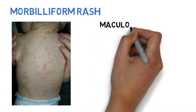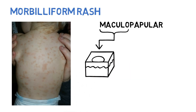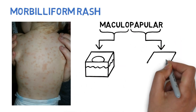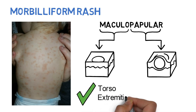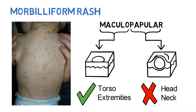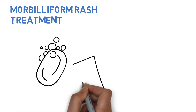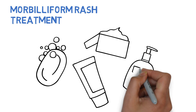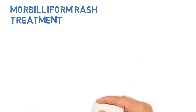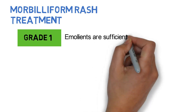A morbilliform rash is maculopapular. This means that there are macules, which are flat discolored spots on the skin, as well as papules, which are raised bumps. Lesions are often on the torso and extremities, but spare the head and neck. For treatment, counsel the patient on gentle skin care. You can refer to our videos on tips for gentle skin care for more details. For grade 1 toxicities, emollients are sufficient.